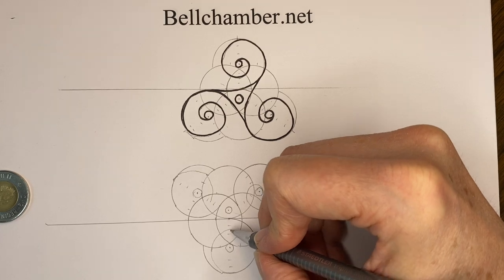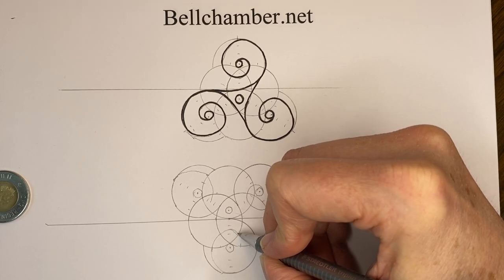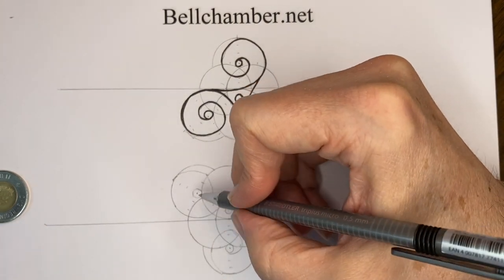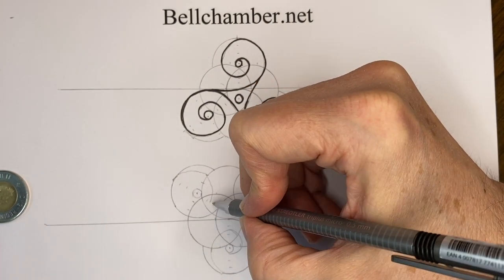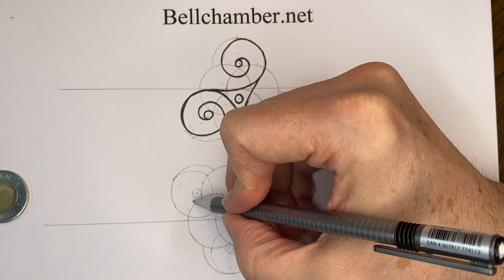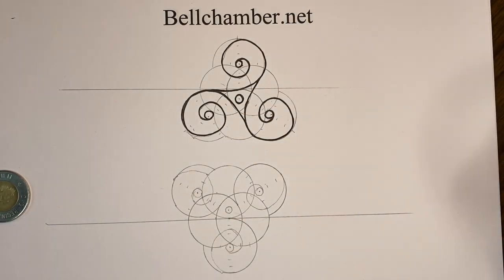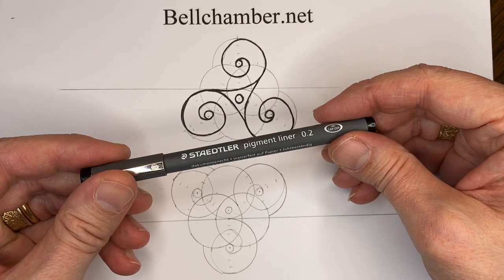So we're coming back to here, sort of meeting at the top. This one will come to the first curve into the first third and be right about there. Now I'm going to get my thin pigment liner.